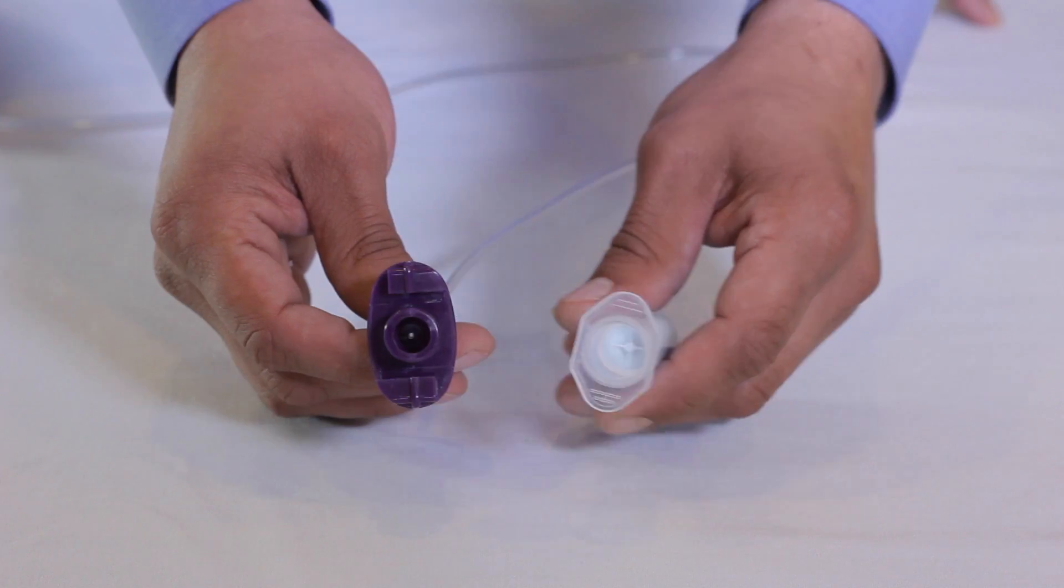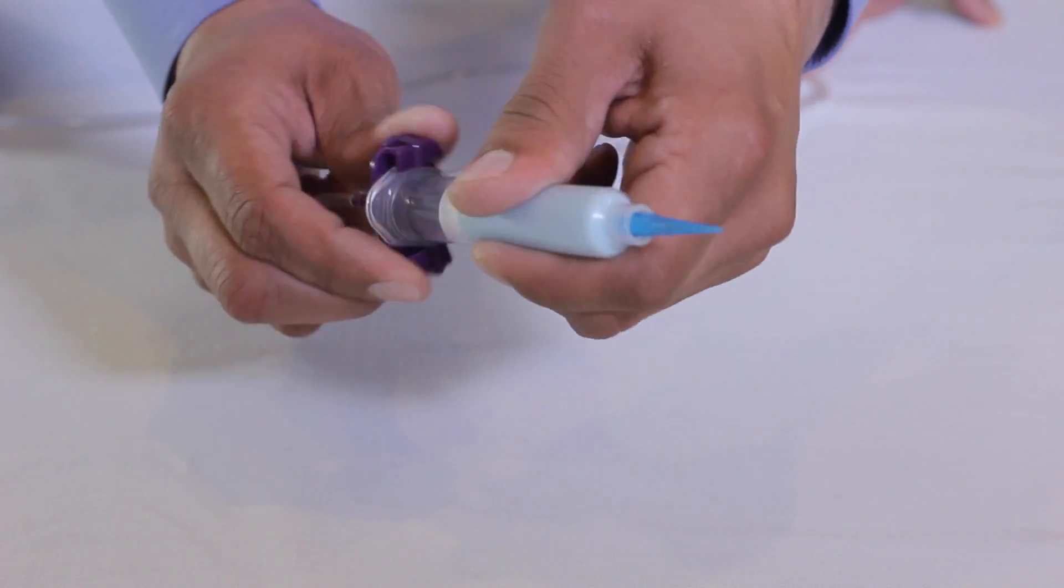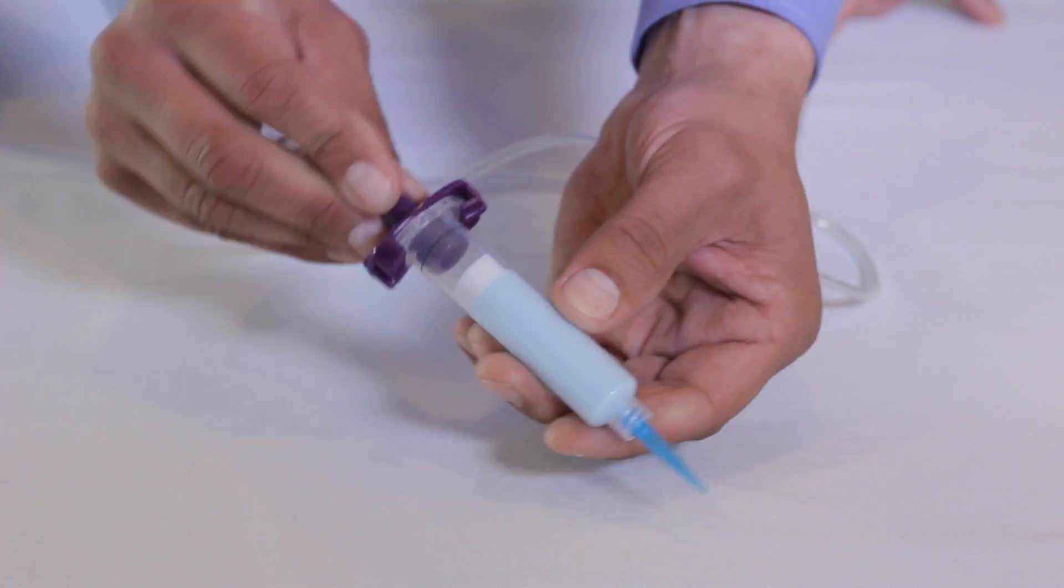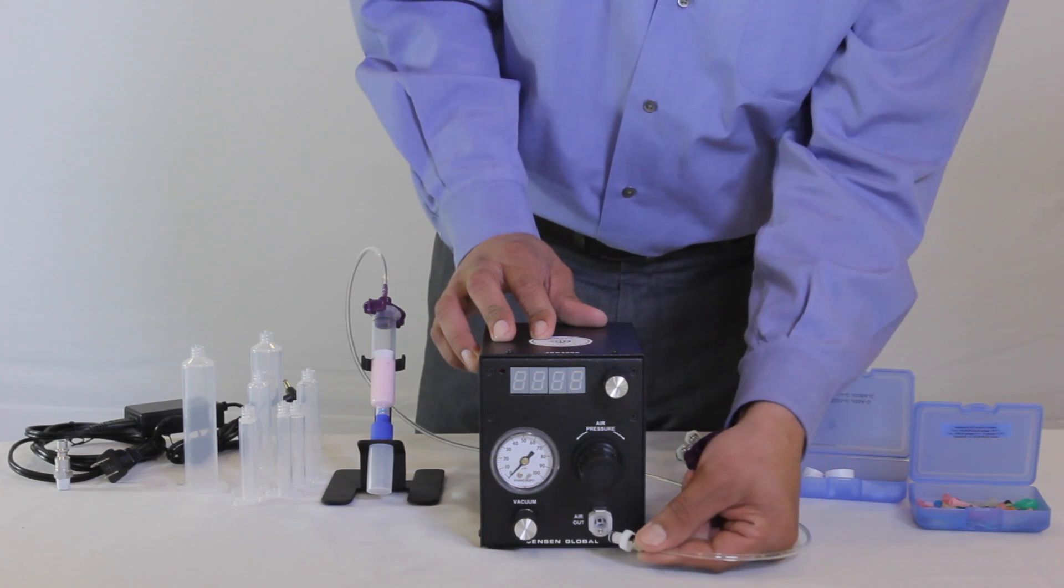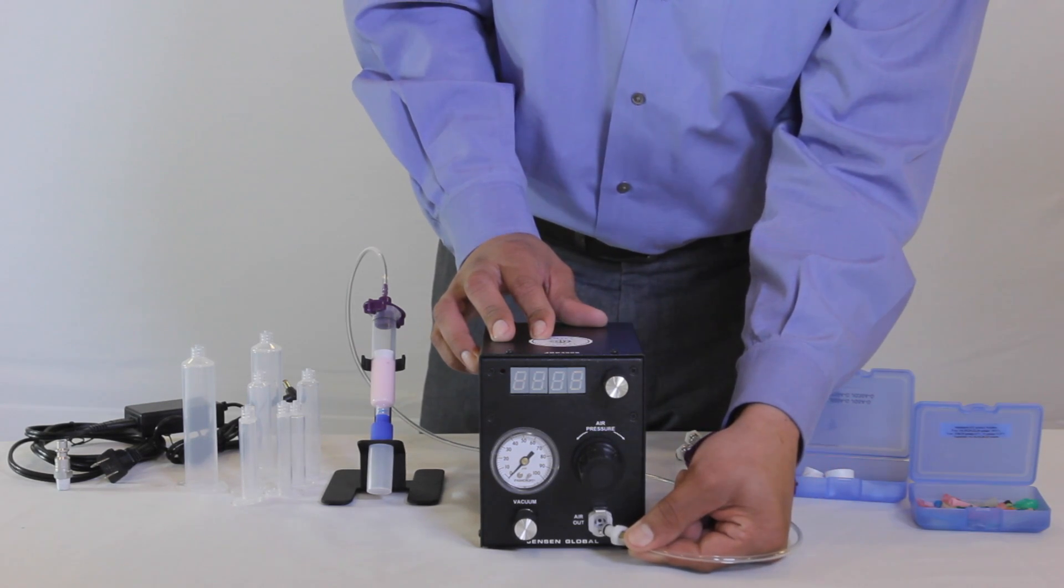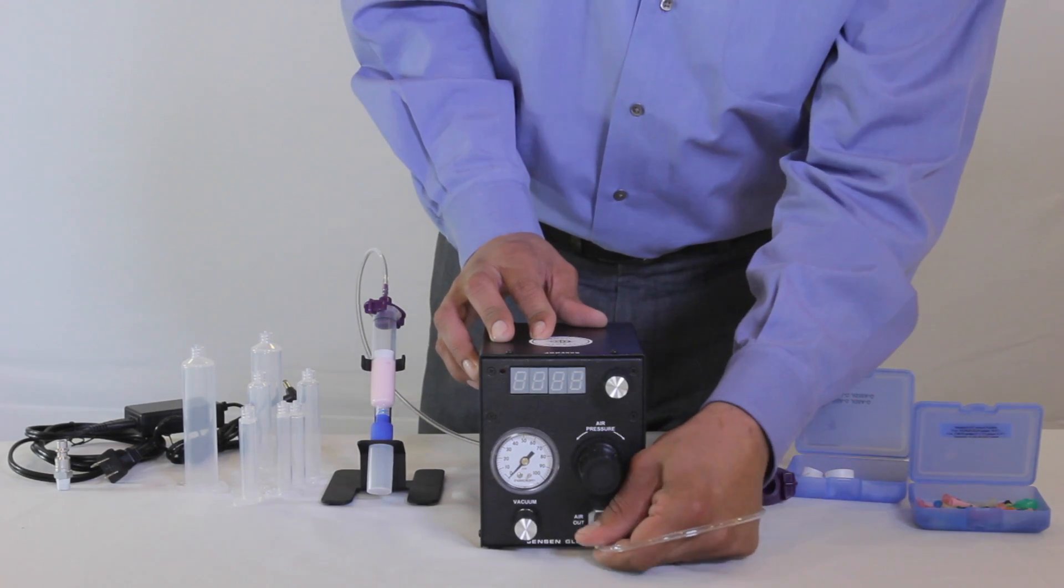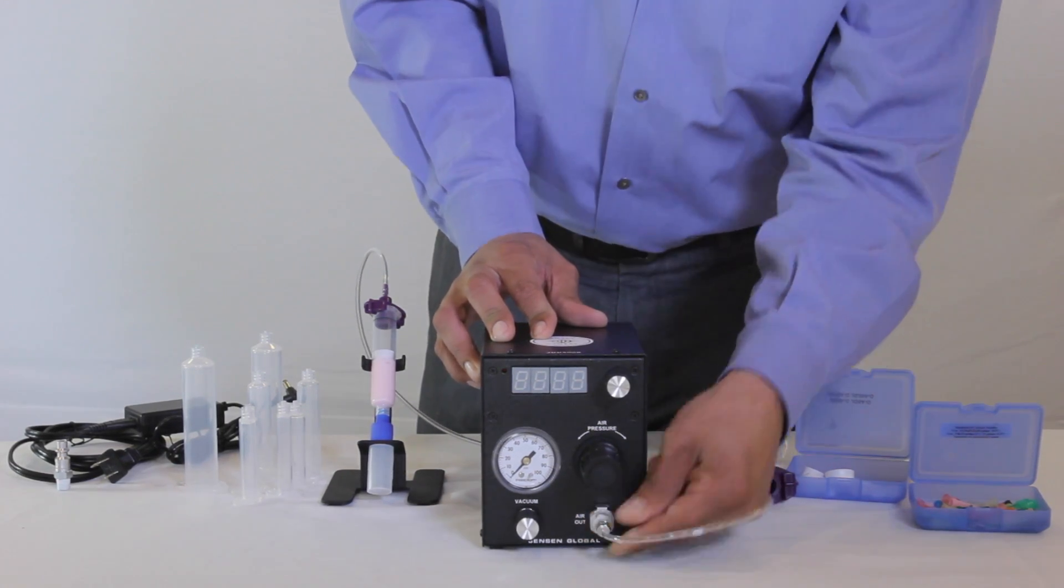Now we're going to attach a pre-filled 10 cc air syringe to a 10 cc adapter. Connect the white fitting adapter to the air out port located here. Simply press in the fitting and listen for the snap which indicates it's secure.